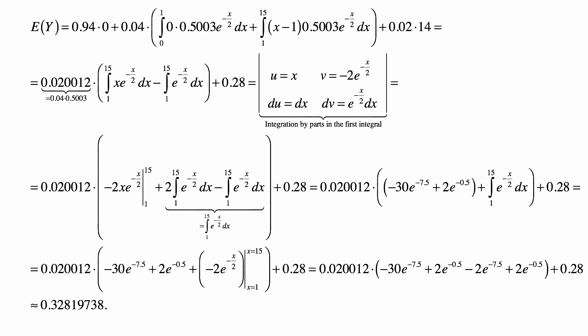So, this becomes 0.020012 times, and that uv evaluated from the 2 ends up being minus 30 e to the minus 7.5 plus 2 e to the minus 0.5, and then plus that integral from 1 to 15 of e to the minus X over 2 dX, and then plus 0.28 at the end.